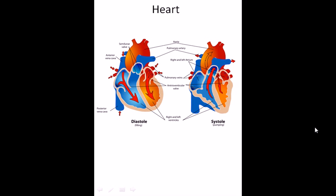The heart can pump blood in two different physical states. One is called systole and the other is called diastole. The heart has two different regions: the atria and the ventricles. During systole, the ventricular region contracts. During diastole, the ventricle region expands and blood is pumped into the heart. In systole, the heart muscles contract, and this contraction results in the pumping of blood out of the heart.